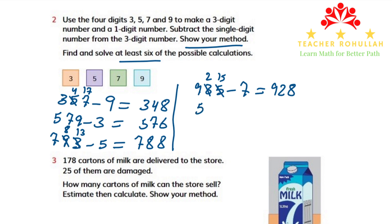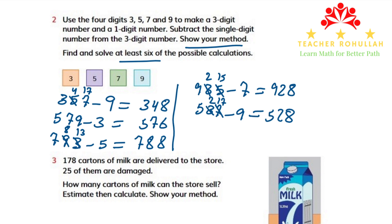The fifth number we can make is 537 minus 9. We follow the same process and borrow from 3. It becomes 2, and the ones become 17. 17 minus 9 equals 8, 2 minus nothing is 2, and 5 minus nothing is 5. The answer is 528.